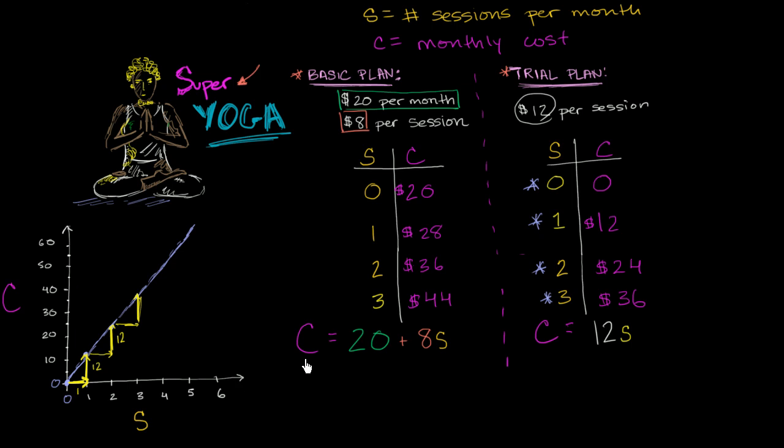Now let's think about the same thing for the basic plan. On the basic plan, when I go to zero sessions, it costs me $20. Where would I plot that on my graph? Zero sessions are going to cost me $20. That's that point right over there.